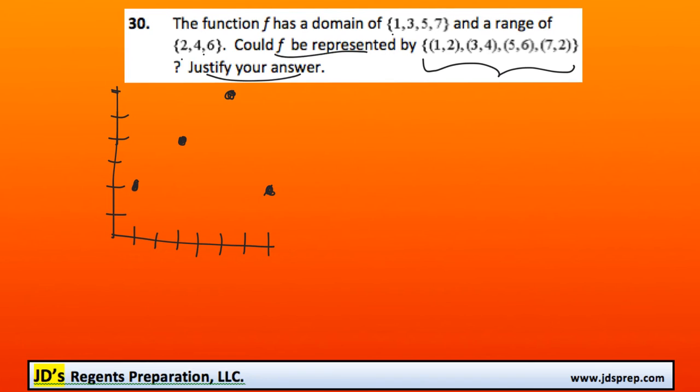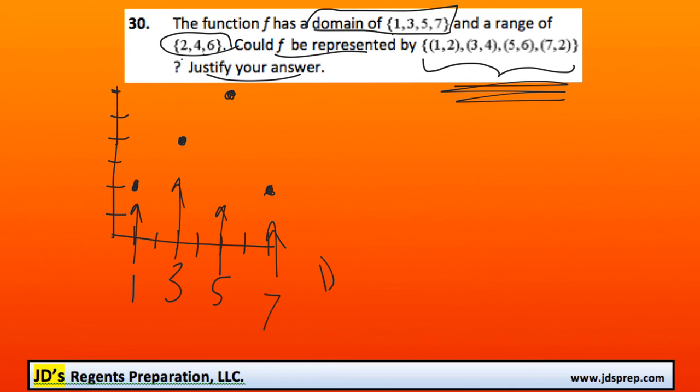So, to show that f could be represented by these four points, we need to see if these four points respect the domain of 1, 3, 5, 7, and a range of 2, 4, and 6. So let's see. We've got a domain of 1, 3, 5, and 7. So the domain checks out. It's good. And the range is 2, 4, and 6. So the range is also appropriate.